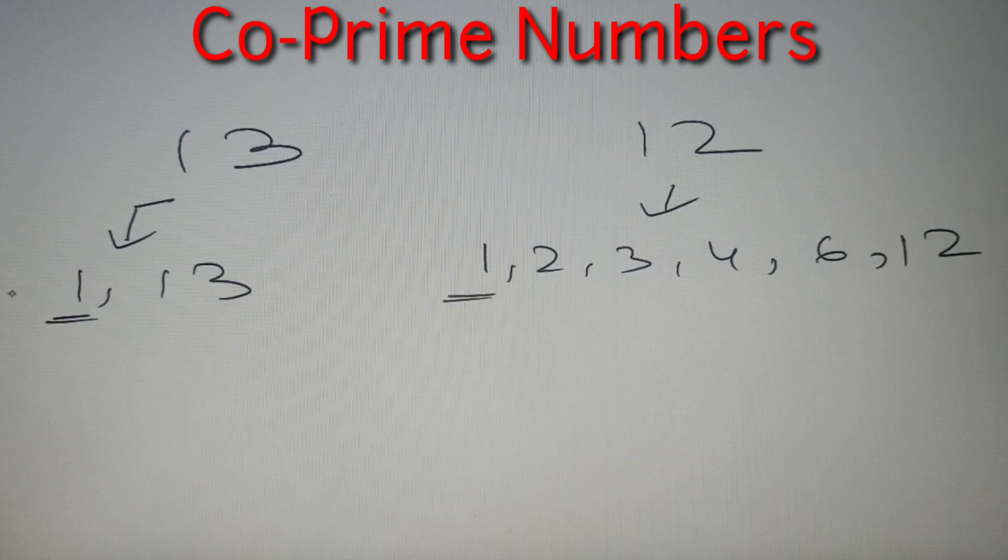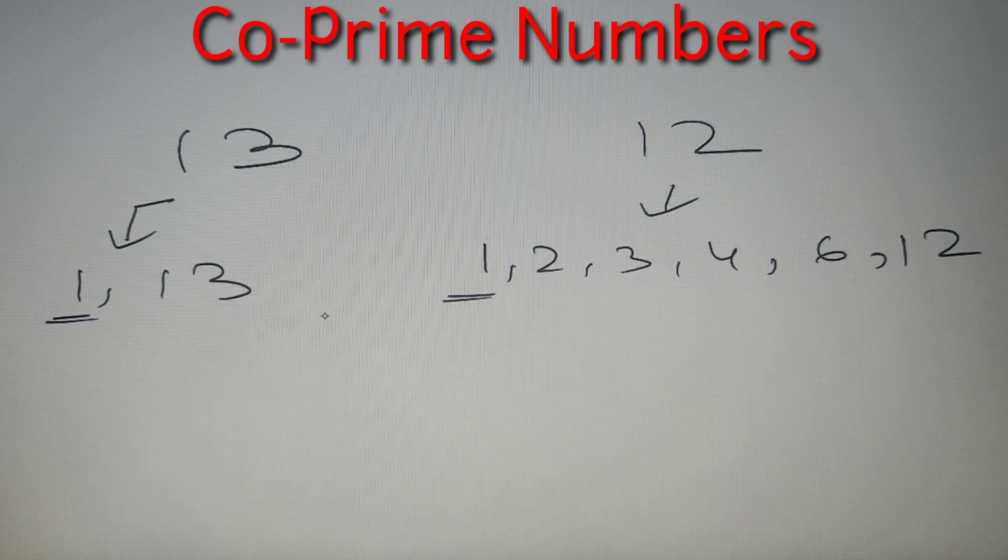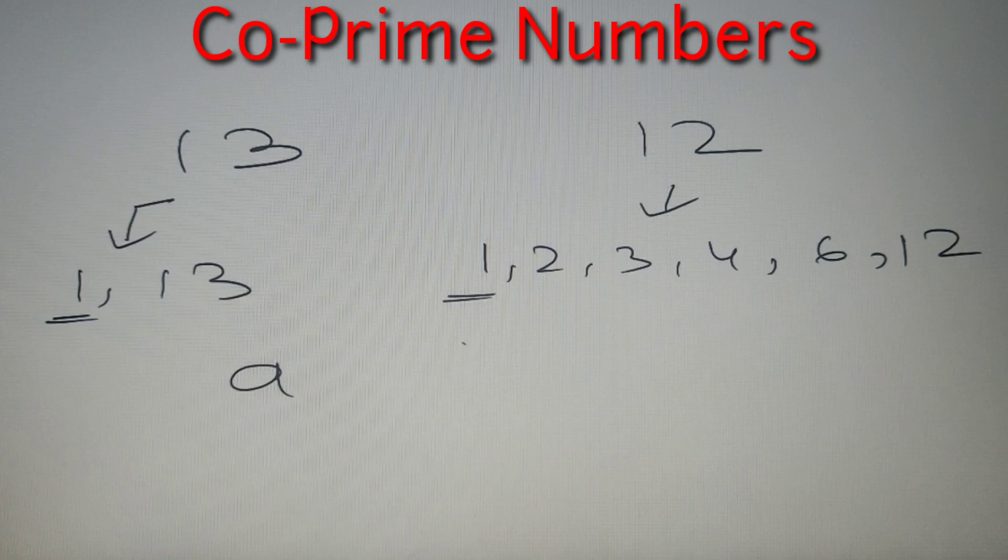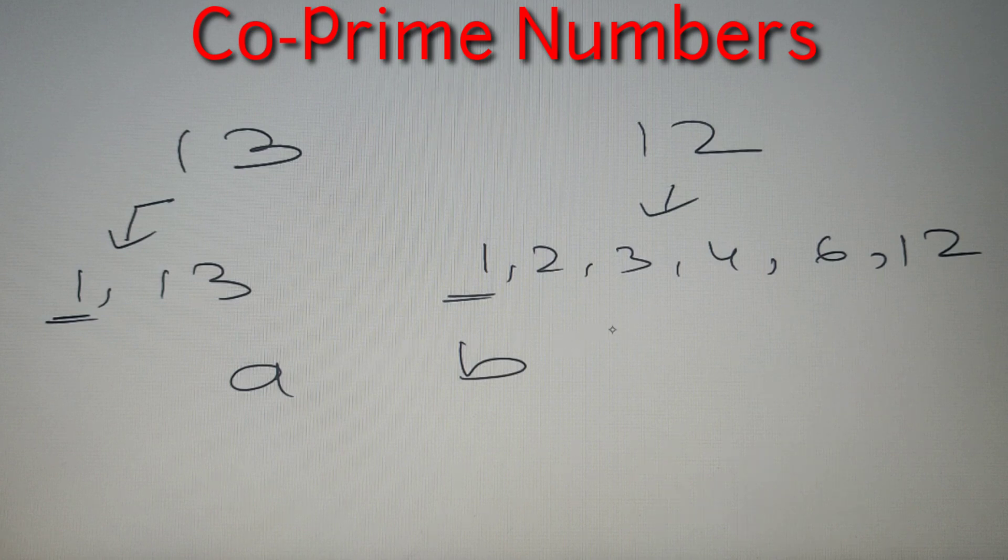So these two numbers are co-prime because there is no other common factor other than the number 1. So in general if two numbers a and b are co-prime to each other then we say that a is co-prime to b or either we can say that a is relatively prime to b.